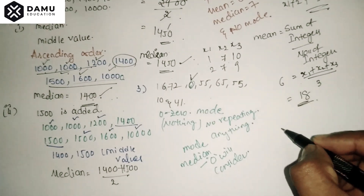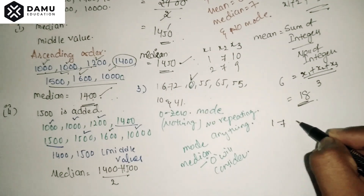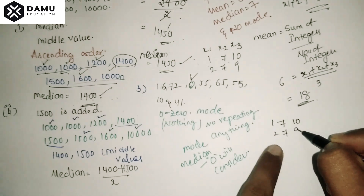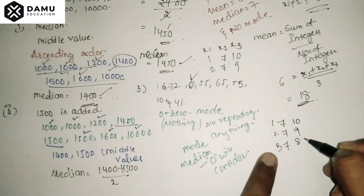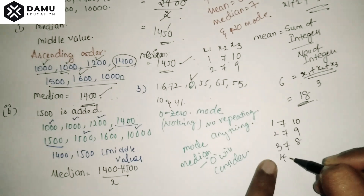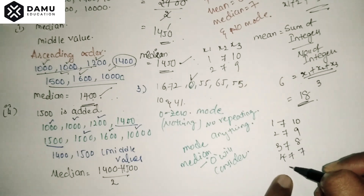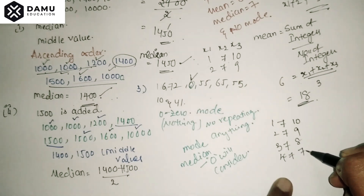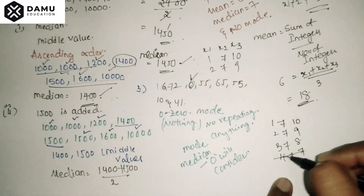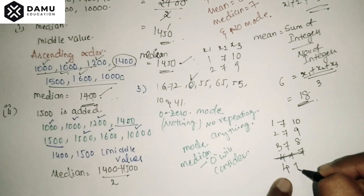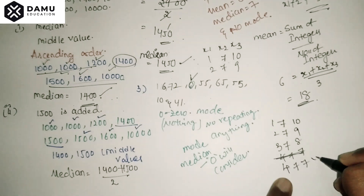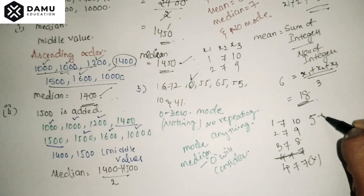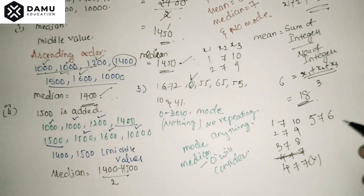We check each for no mode. The set {4, 7, 7} has 7 repeated, so that is not valid since there would be a mode. Similarly {5, 7, 6} — we verify no repetition. So only the sets with no repeating values are valid answers.